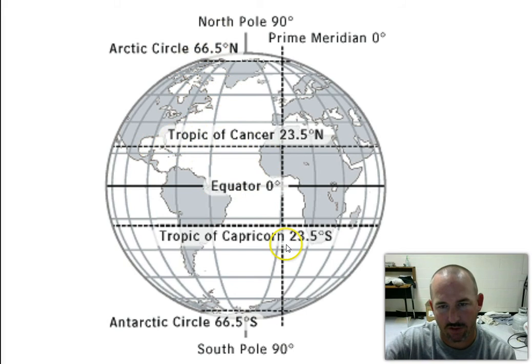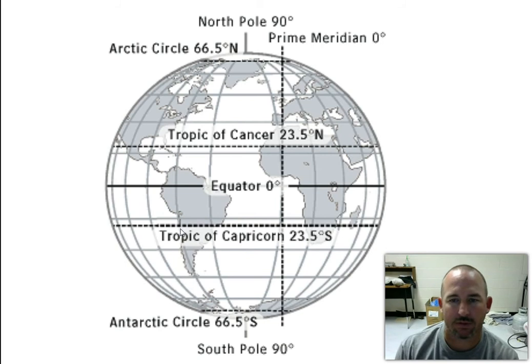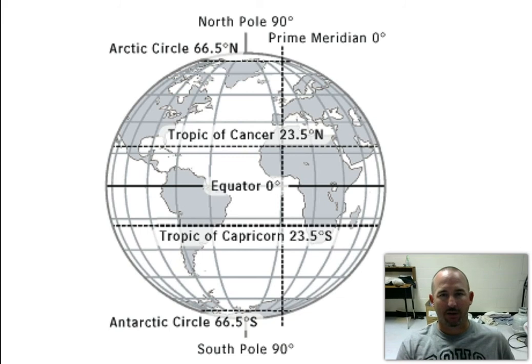Tropic of Cancer, Tropic of Capricorn—those things you'll hear about as we go through here. So make sure you understand that. Tropic of Cancer is 23.5 North, Tropic of Capricorn, 23.5 South.